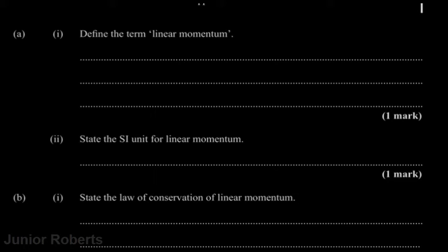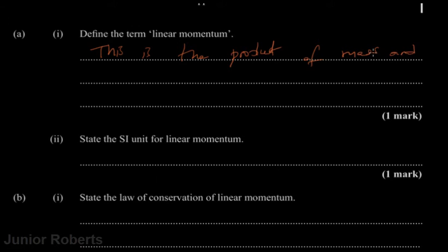The first thing we want to do in question three is to define the term linear momentum. Linear momentum is the product of mass and velocity of an object. So essentially, linear momentum is the mass multiplied by the velocity of that object.